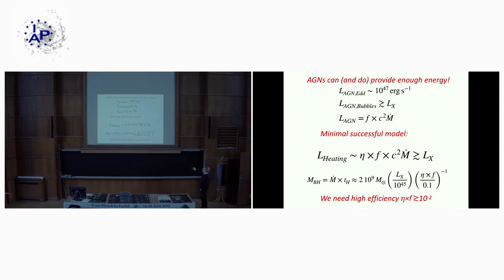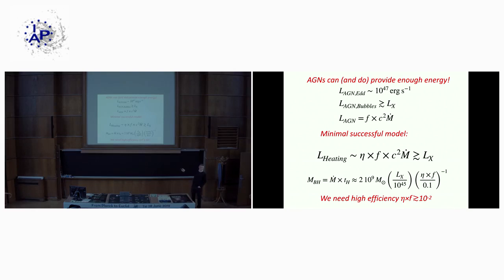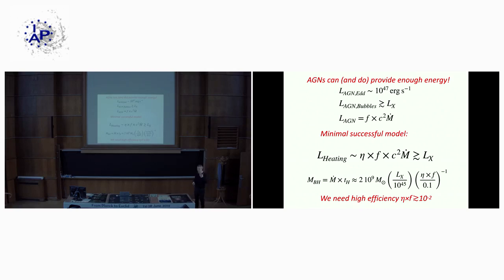The AGN feedback model says AGNs can and do provide enough energy. The centers of clusters contain the most massive elliptical galaxies hosting the most massive black holes. For a black hole of one billion solar masses, the Eddington power is about 10^47 ergs per second — more than the entire X-ray luminosity of the cluster. Analysis of bubble sizes shows that AGN power is actually comparable to the X-ray cooling losses.